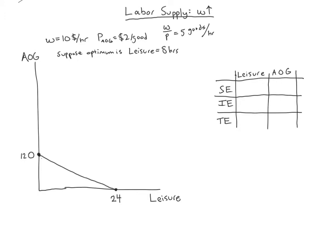We're told for the sake of argument that our optimum is 8 hours of leisure — that's basically just enough time to sleep. This person must really like working to get money to buy all the goods. We draw an indifference curve tangent at 8 hours of leisure. If we spend 8 hours on leisure, we're spending the rest of our time on labor. The gap between 8 and 24 is our amount of labor — that's 16 hours. Working 16 hours at 5 goods per hour gives us 80 goods. So our optimal consumption is 80 goods and 8 hours of leisure.